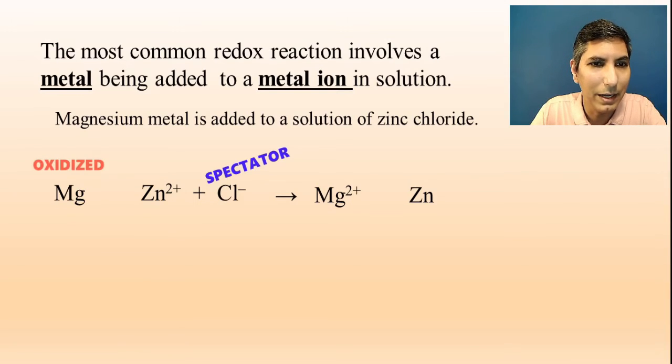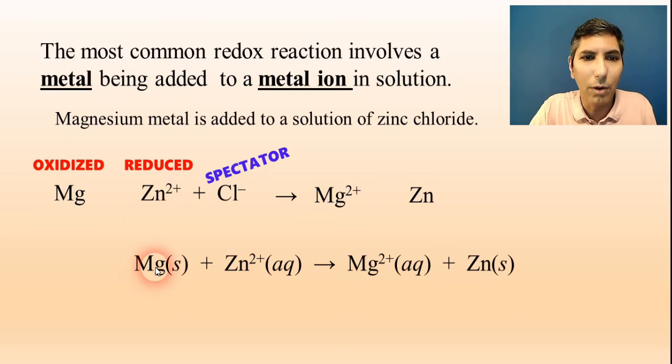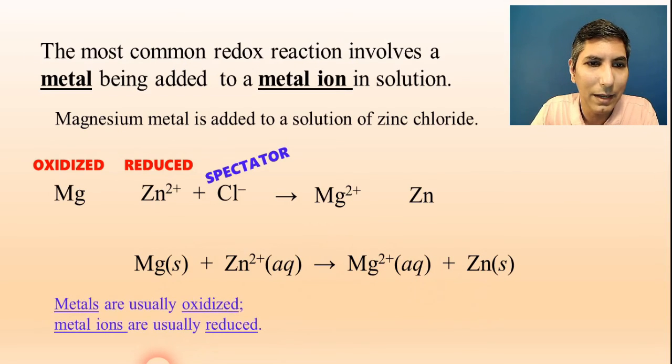If we leave out the spectator ion, we can realize that the magnesium is oxidized, the zinc ions are reduced, and we can write the overall net ionic equation like this: Mg solid plus Zn2+ in aqueous form yields Mg2+ in aqueous form and zinc solid. Generally speaking, when we have reactions like this, the metals are oxidized and the metal ions end up being reduced.